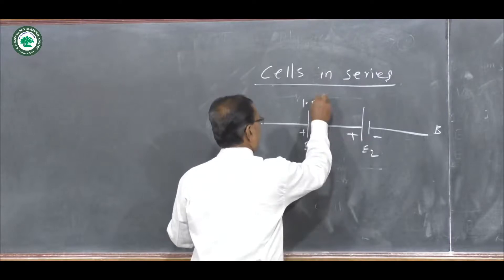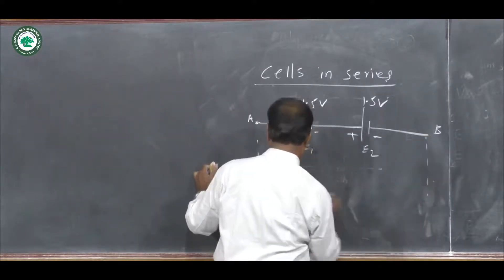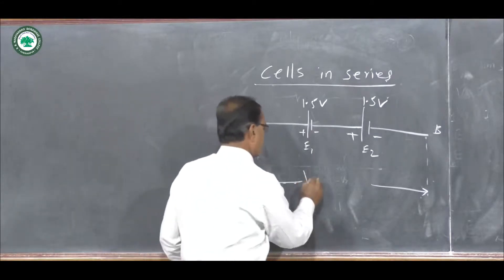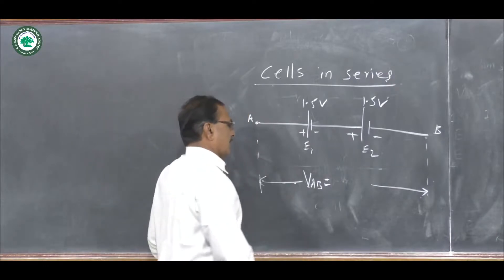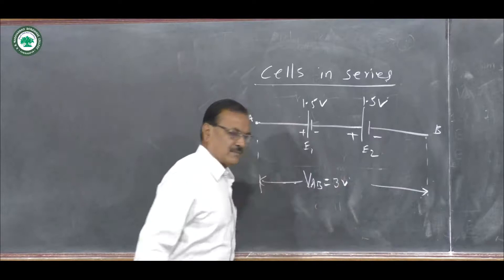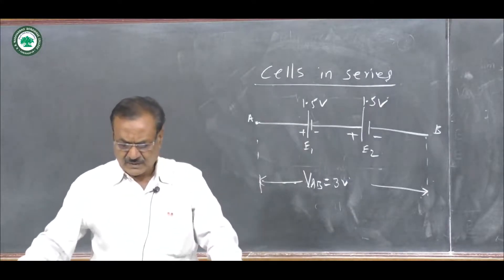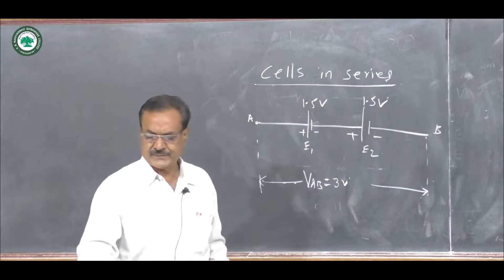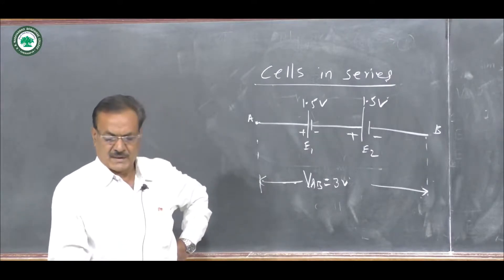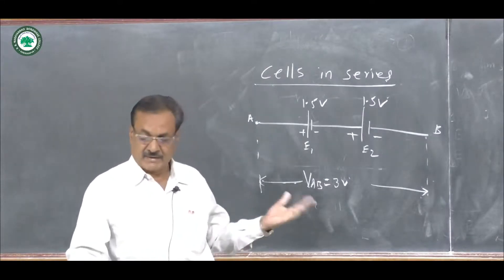Suppose the value of each cell is 1.5 volts. The voltage across the A and B terminals is the summation of all cells — that is, 1.5 + 1.5 = 3 volts across the series combination. Thus, when n cells are connected in series, the equivalent EMF is the algebraic sum of the individual EMFs.